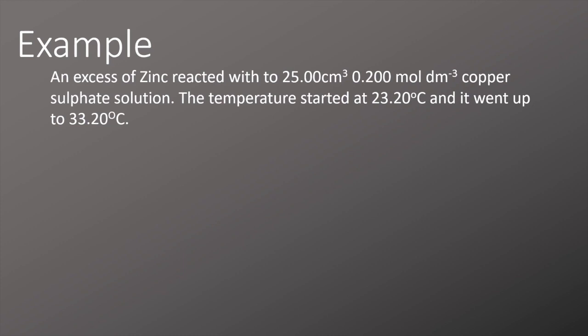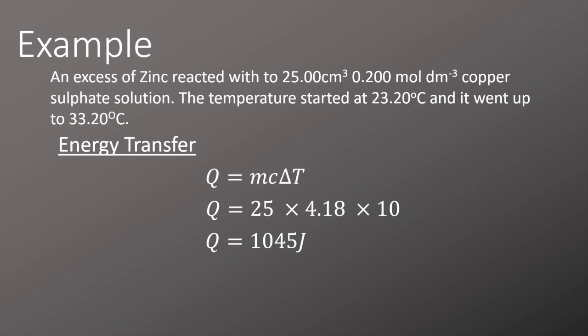The first thing we need to do is calculate the energy transferred. To do this we'll use the equation Q equals mc delta T and we'll put the numbers in. Here we've got mass of 25 because one centimeter cubed of solution has got a density of one gram per centimeter cubed, which gives us 25 grams. We've got the specific heat capacity of 4.18 and we've multiplied it by delta T which is 10, so 10 degrees celsius or 10 kelvin. We then calculate a value of 1045 joules. Now we often give energy transfers and enthalpy changes as kilojoules per mole, so we'll quickly convert that to kilojoules per mole by dividing by a thousand.